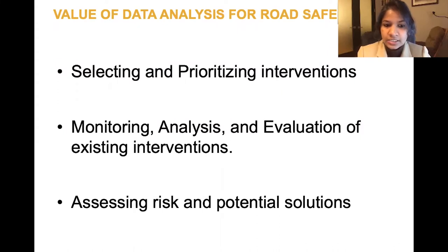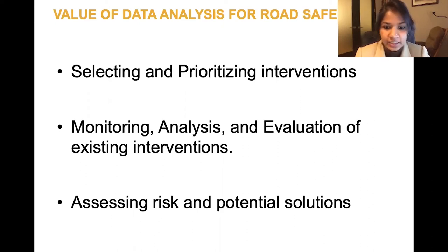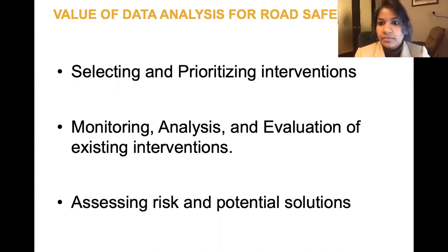Another reason is monitoring, analysis and evaluation of existing interventions. If a lane is narrowed or speed is reduced in certain corridors, it is important to be able to measure how effective that intervention was at saving lives and protecting vulnerable users from injuries. A third reason is to assess risk and various potential solutions.